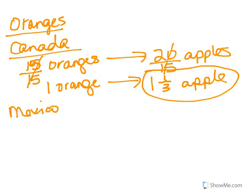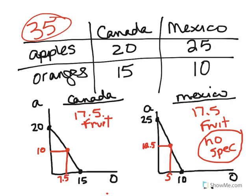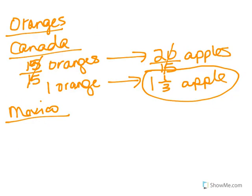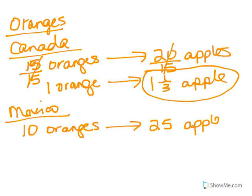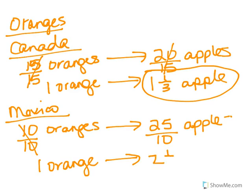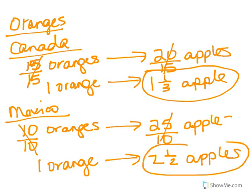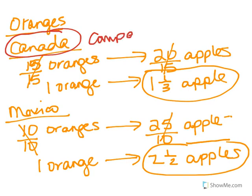Then we do the same thing for Mexico. For every 10 oranges Mexico produces, they give up 25 apples. Dividing both sides by 10, we see that 25 divided by 10 is two and a half. So for every one orange Mexico produces, they give up two and a half apples. Canada clearly has the comparative advantage in orange production because they only give up 1⅓ apples, whereas Mexico has to give up two and a half apples. Because Canada gives up less, Canada has the comparative advantage in orange production.